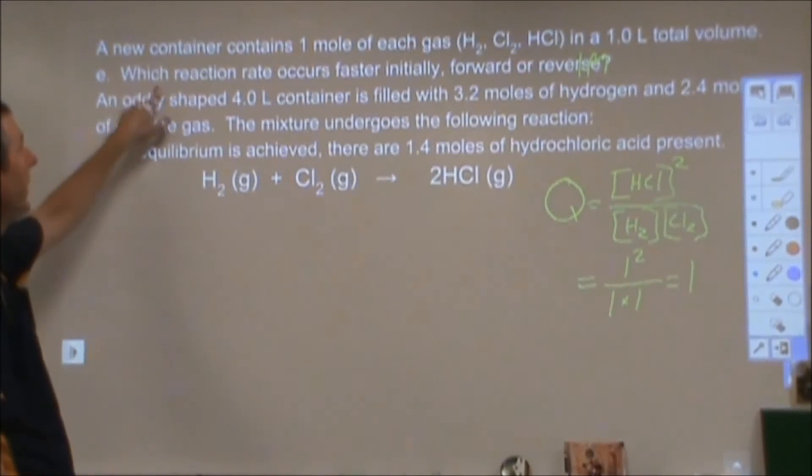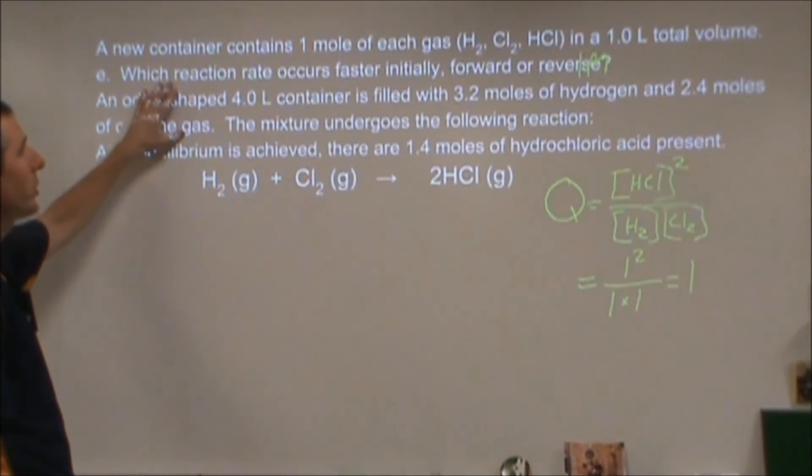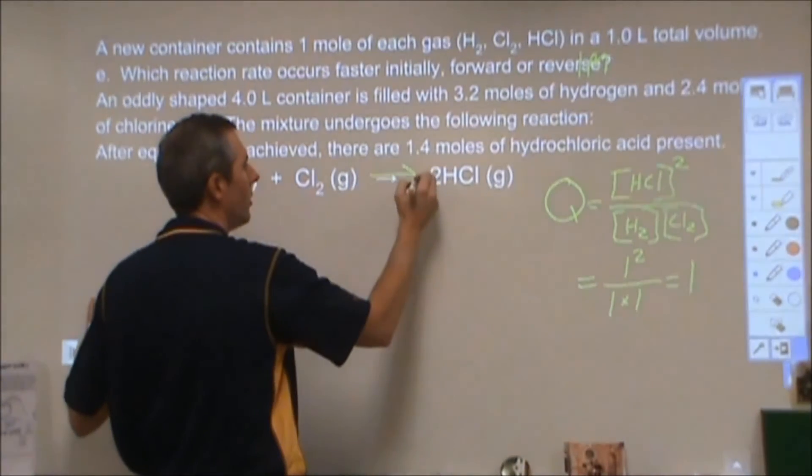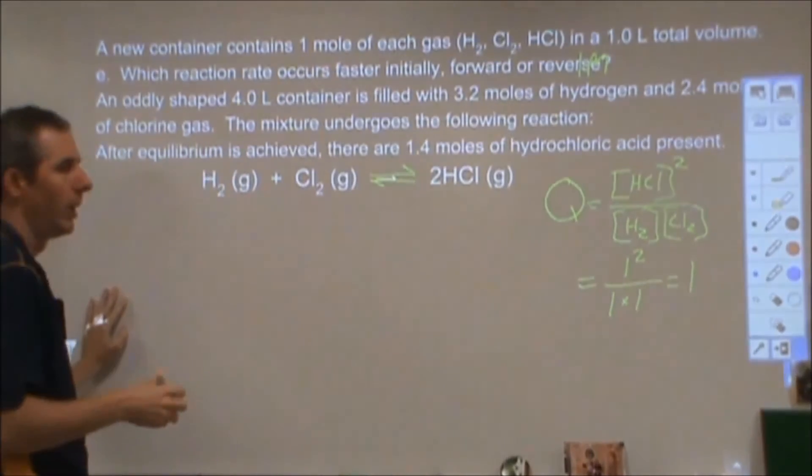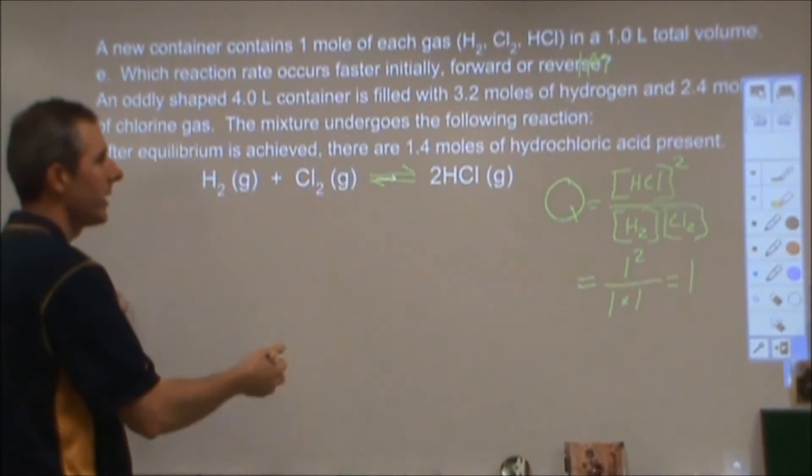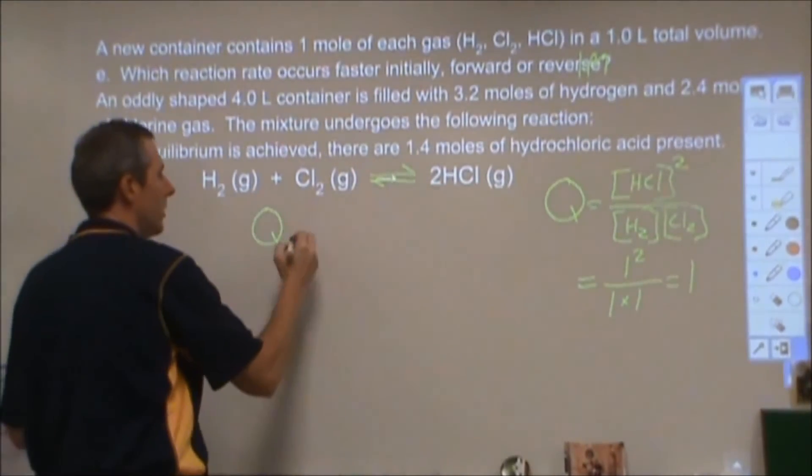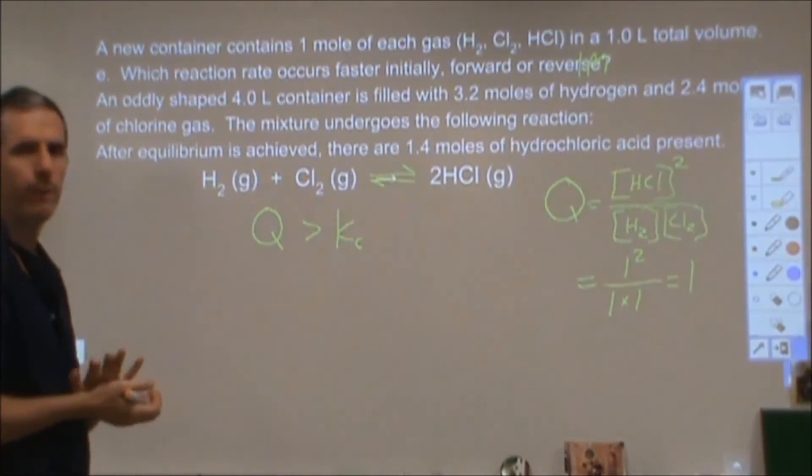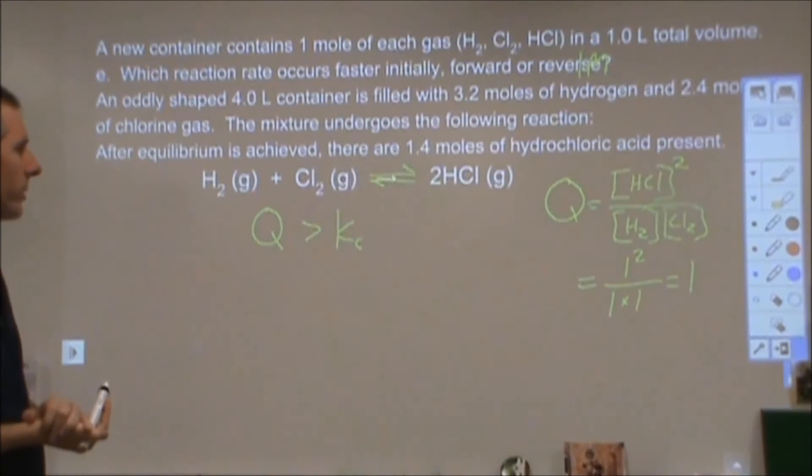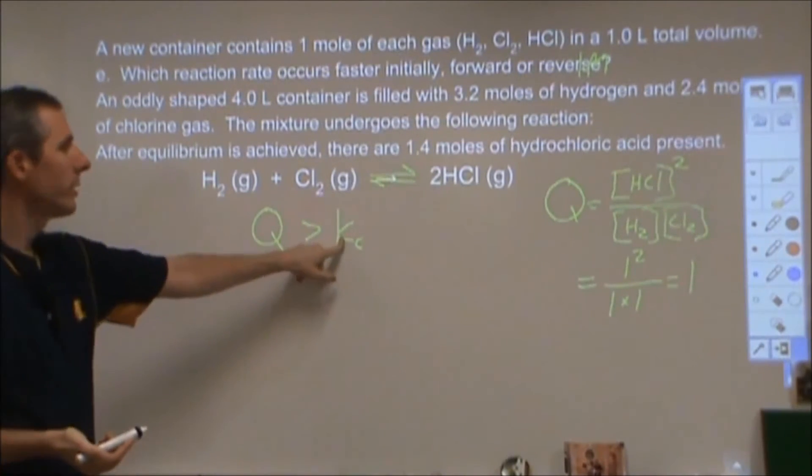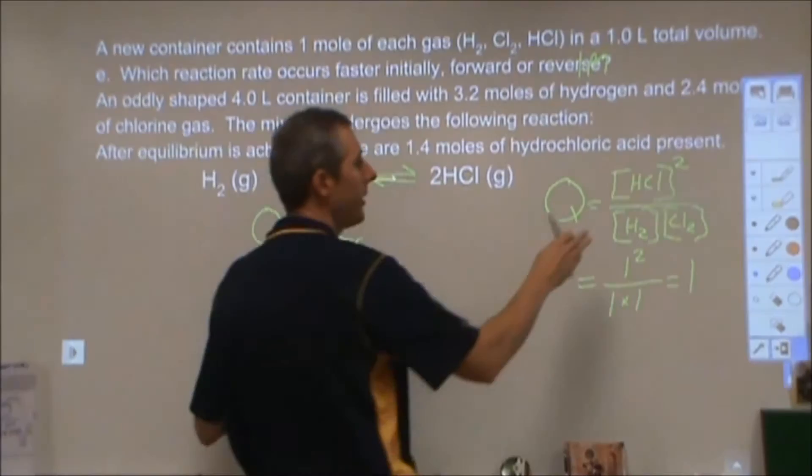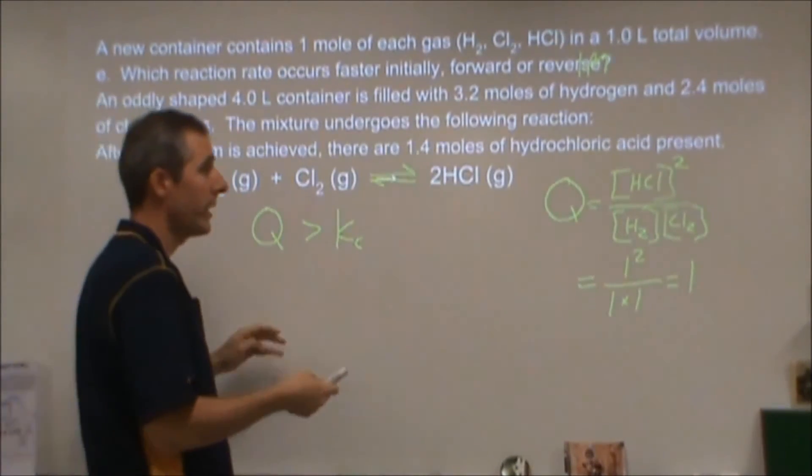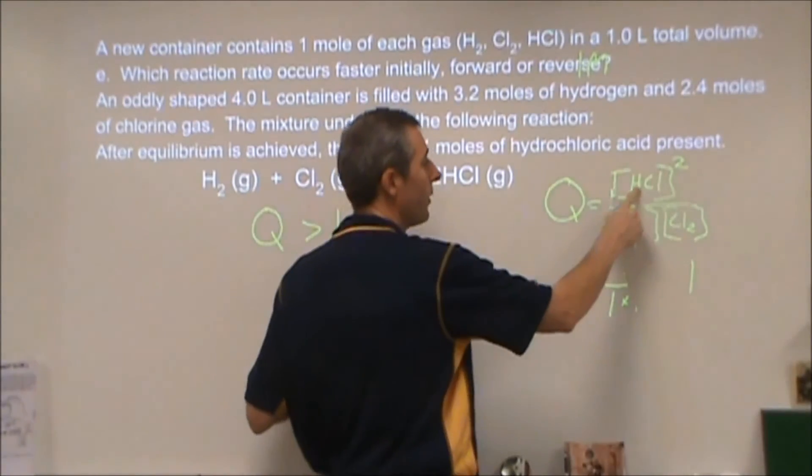Then, in part e, it asks me to interpret that which reaction rate occurs faster initially, the forward reaction or the reverse reaction. What that's driving at is if Q is greater than your equilibrium constant. Remember our equilibrium constant from part b was 0.461. So our Q is larger than K. That means that currently we are not at equilibrium, we do not have equal rates. One of the rates must be faster than the other. If we evaluate that further, because Q is too big, that means that we have too much product and too little reactant.